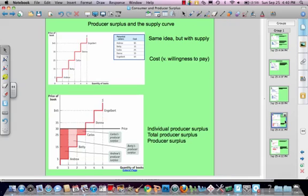Let's flip and look at producer surplus and the supply curve. Same idea, exact same idea, but instead of looking at a demand curve which would go this way, we're looking at our traditional supply curve which goes this way. Here we have individual suppliers rather than individual consumers, and rather than looking at the price they were willing to pay along the demand curve, here we're looking at cost. What is individual producer surplus?